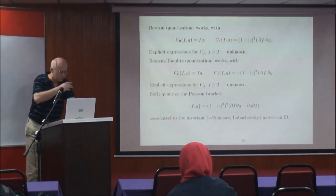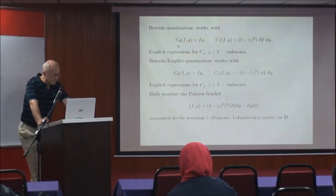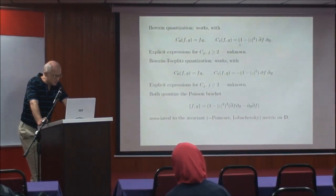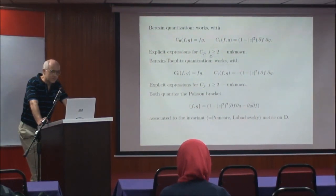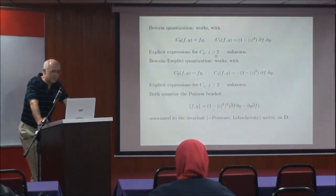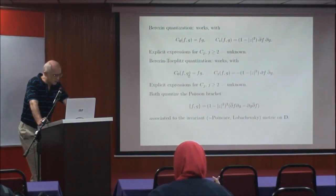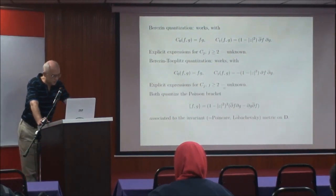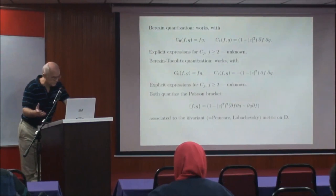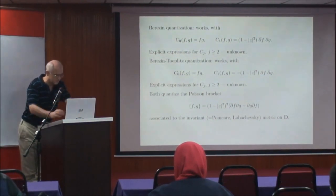From that, by the general ansatz we had yesterday, we see that we have the Berezin quantization with these leading order terms and first order coefficient. There are also higher order C_j, but explicit formulas for the time being — one can try to get them, they involve Bernoulli numbers, it's easy to compute the first hundred on a computer — but there is no general formula for the C_j. Also in terms of Toeplitz quantization, one can show that it works, and one gets C_j slightly differently with a factor of minus 1, so the holomorphic and anti-holomorphic derivatives are swapped. Again, no nice explicit expressions exist even in the simplest second example of the disc.